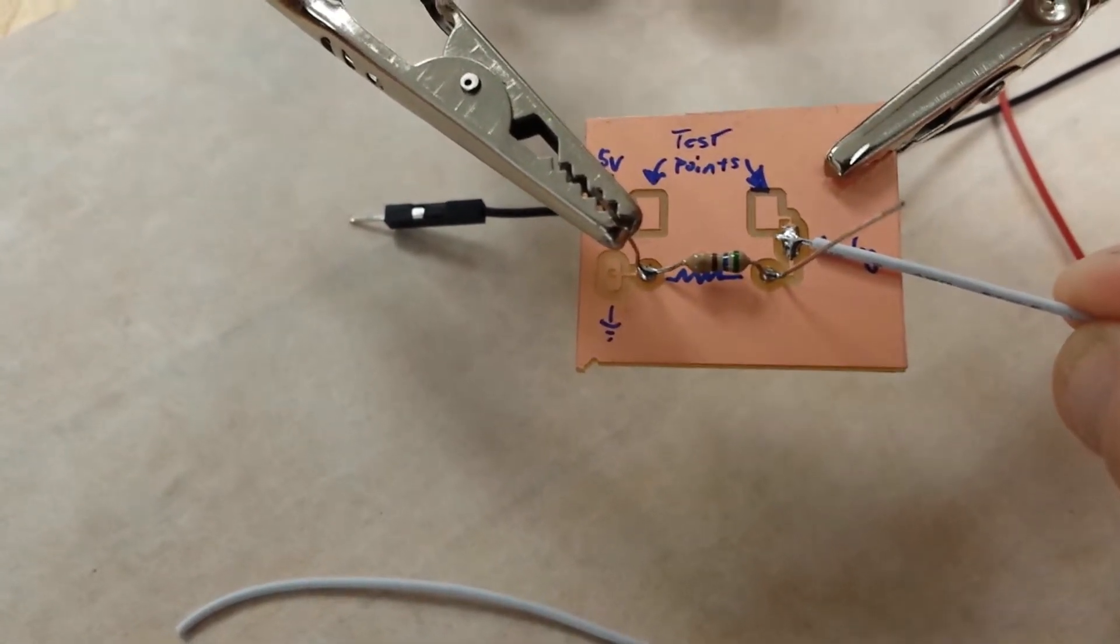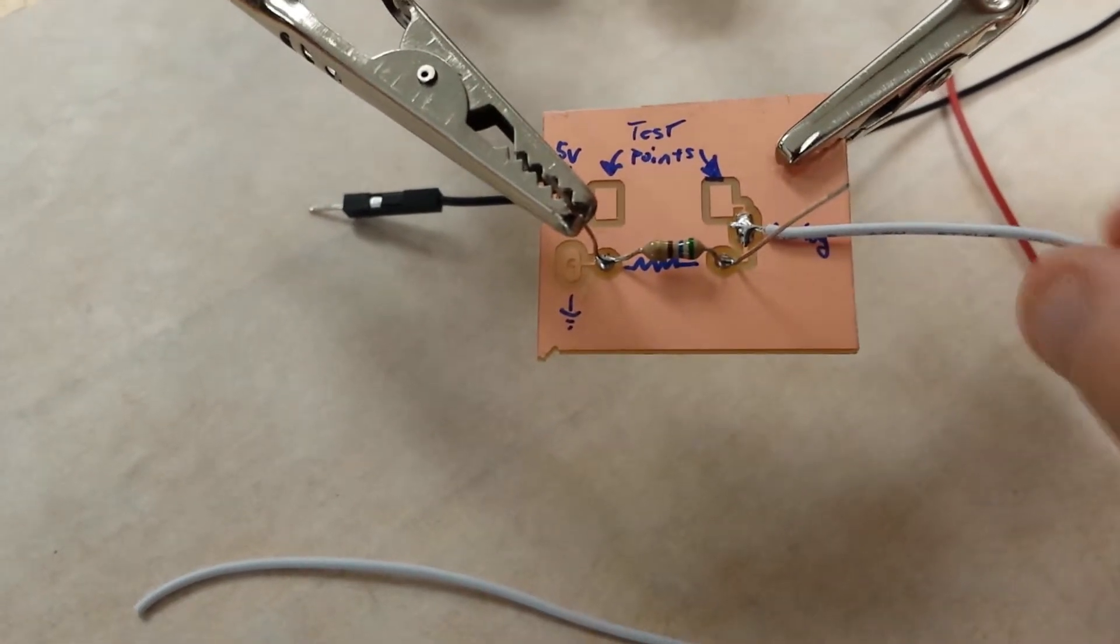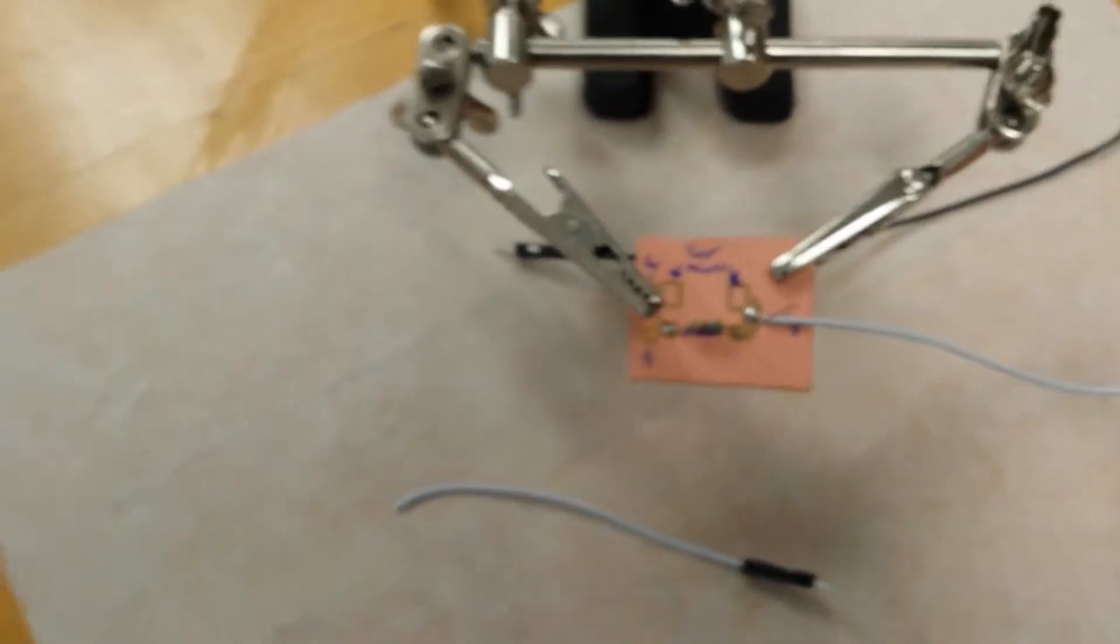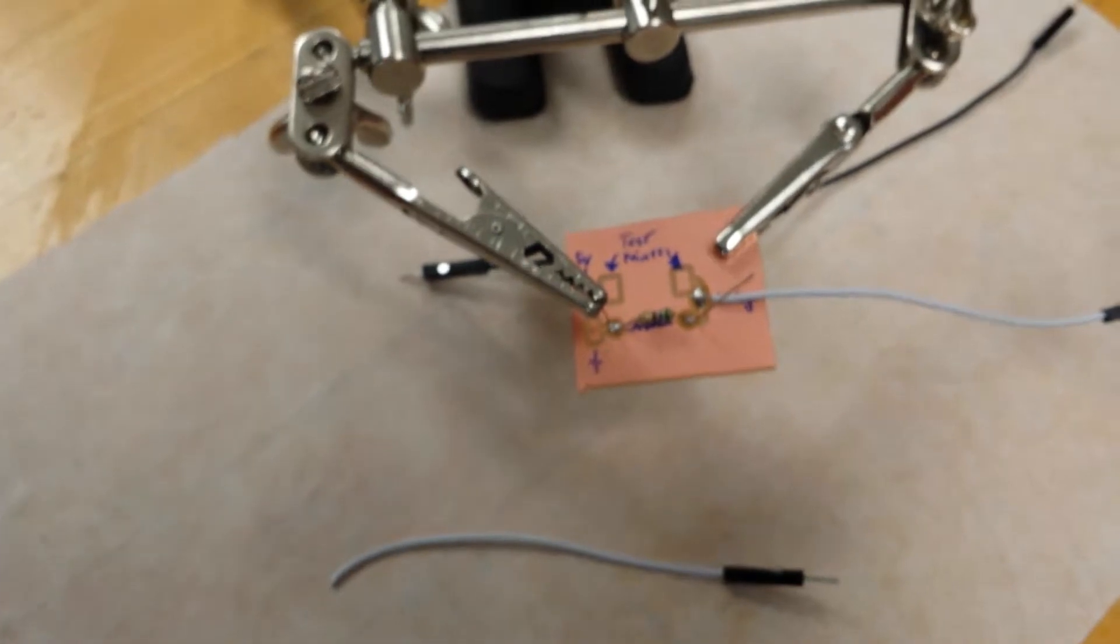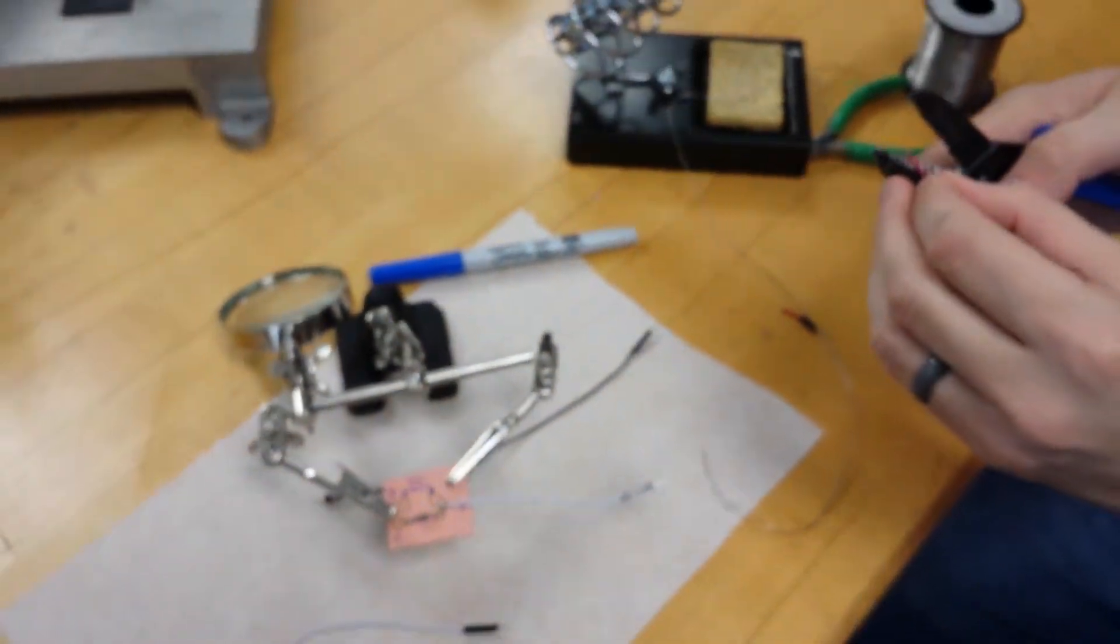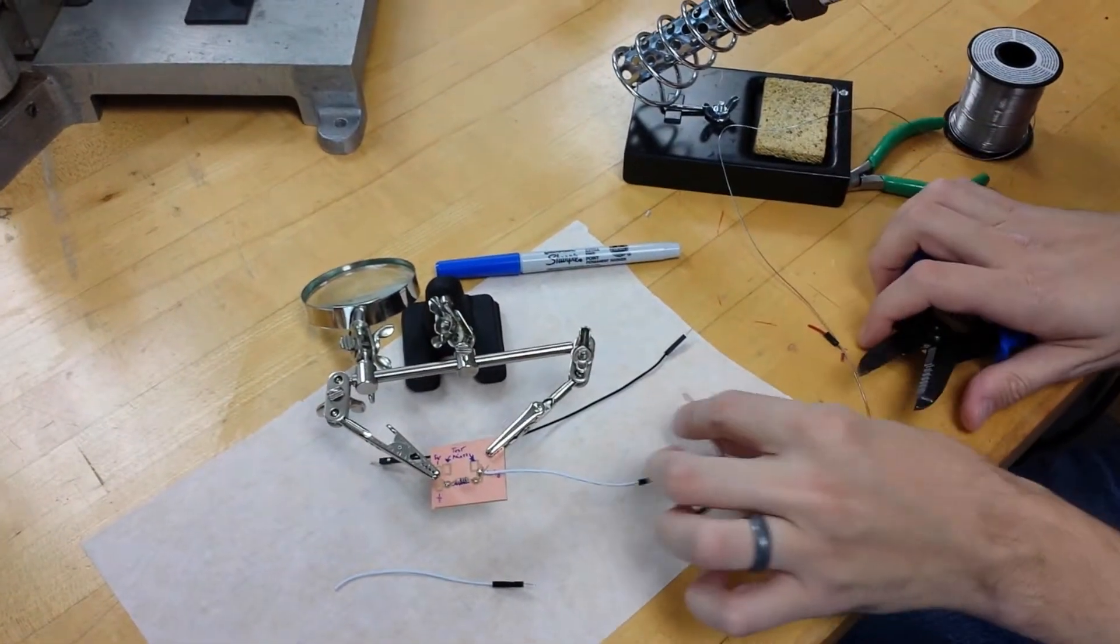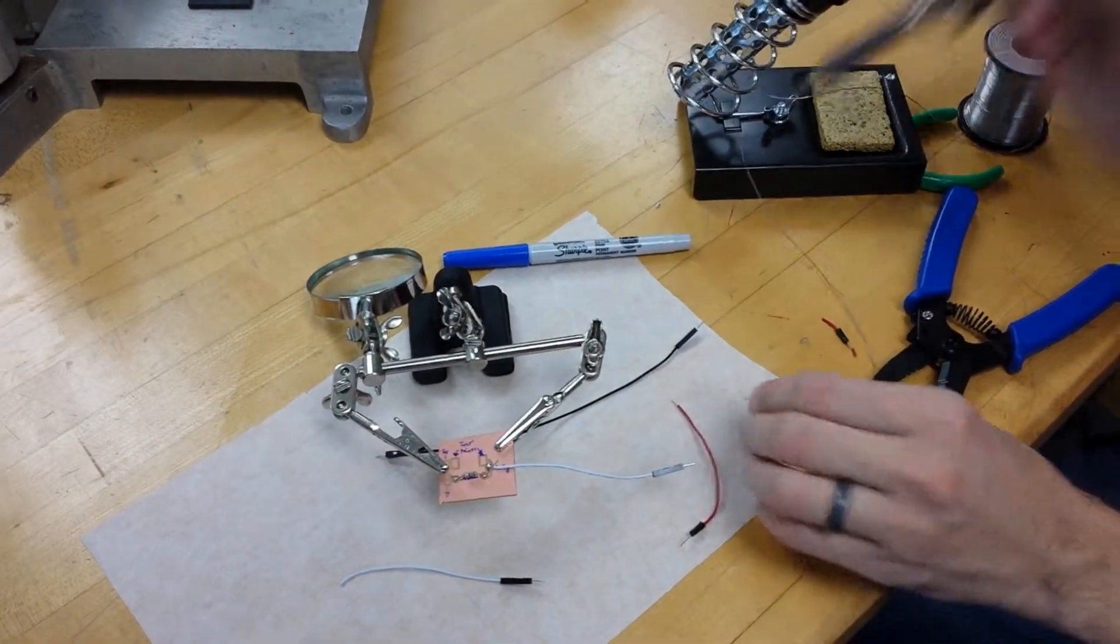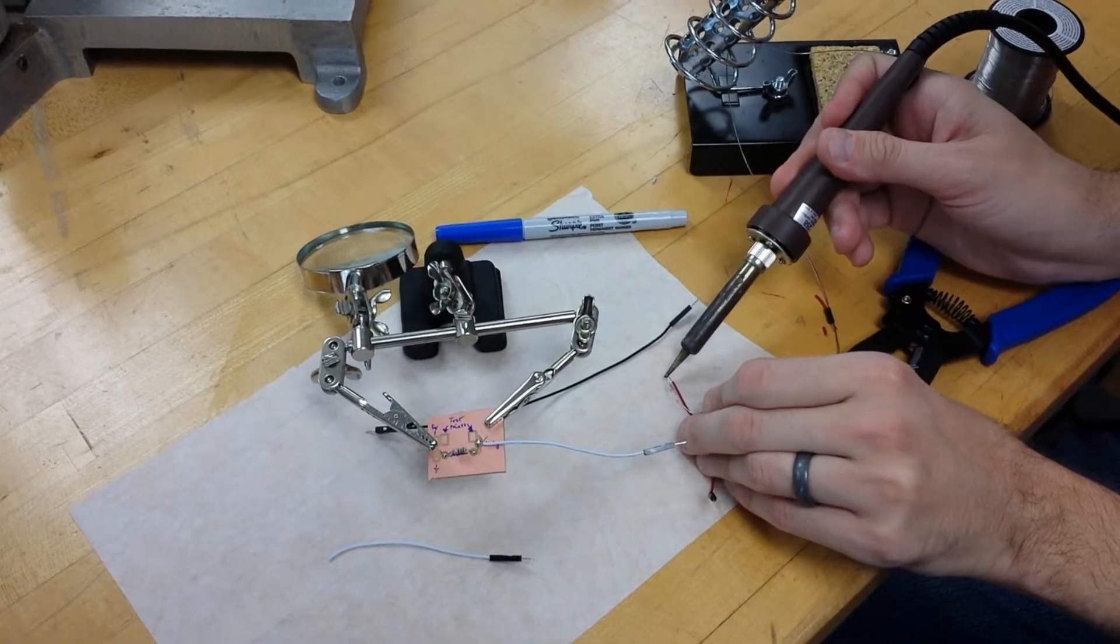And then they cool together. And now that's a solid connection as well. I'll do the same with the, this is our 5 volt signal. I'll strip that. I'm going to tin it with a little bit of solder.